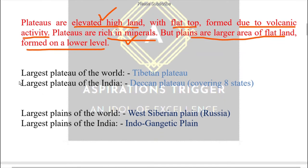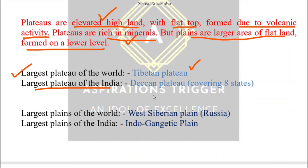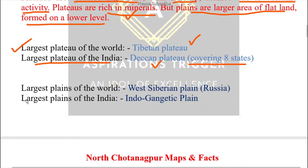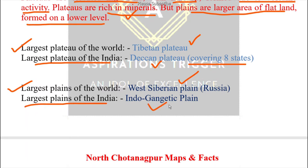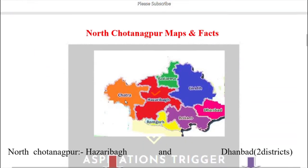The largest plateau of the world is the Tibetan Plateau. The largest plateau of India is the Deccan Plateau, which covers eight states — please comment in the comment box what those eight states are. The largest plain of the world is the West Siberian Plain, and the largest plain of India is the Indo-Gangetic Plain.